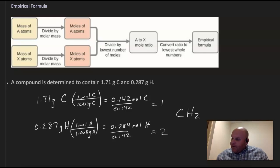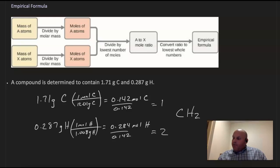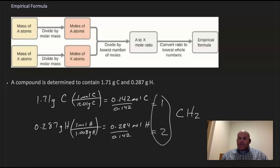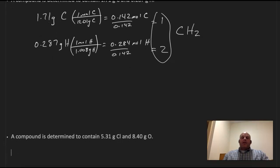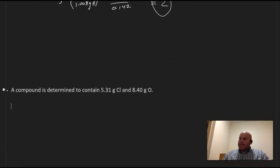Where we did our division, I said hopefully we get some nice whole number integers, because the definition is the simplest whole number ratio of atoms, and that worked out for this problem. It doesn't always work out so neatly, so let's take a look at the next example.